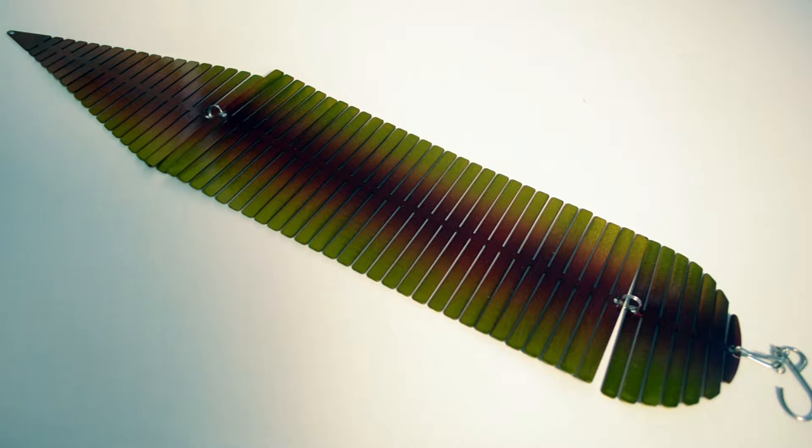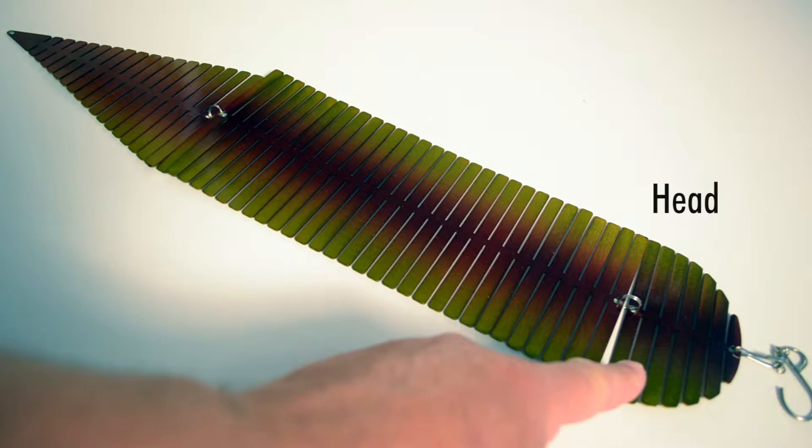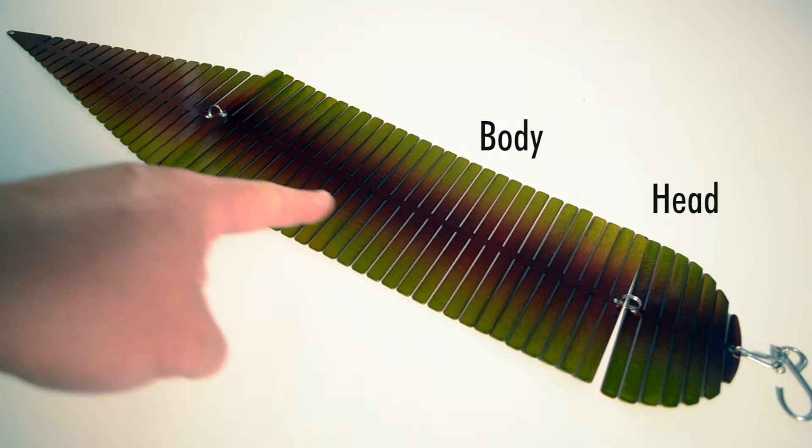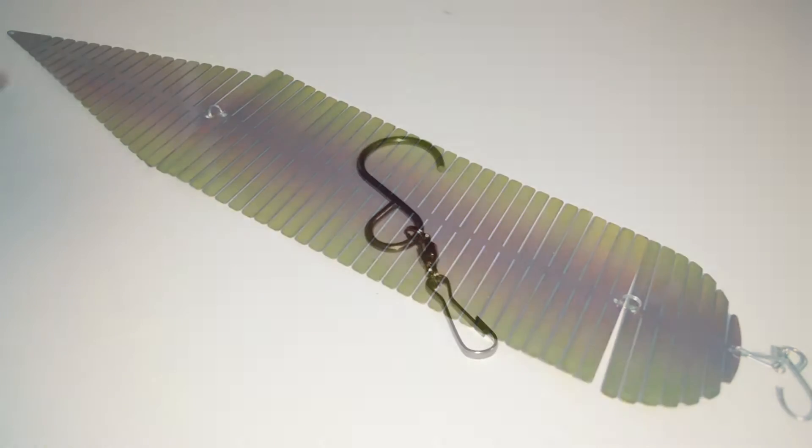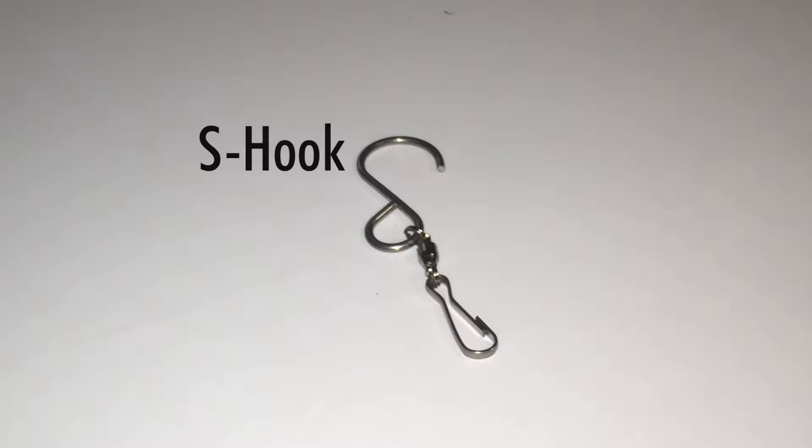The Shimmer Helix comes with three stages: the head, body, and tail. In addition, there's the S-hook and the swivel.